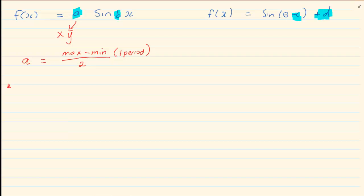So in order to get A, we are going to say maximum minus minimum divided by 2. How do we get B? To get B, you are going to say old over new. Now, what does that mean?